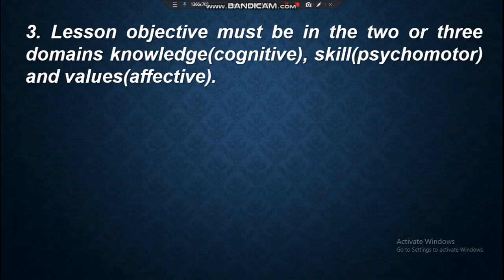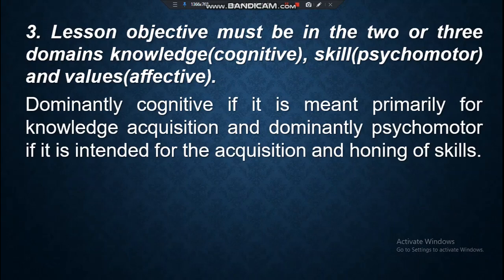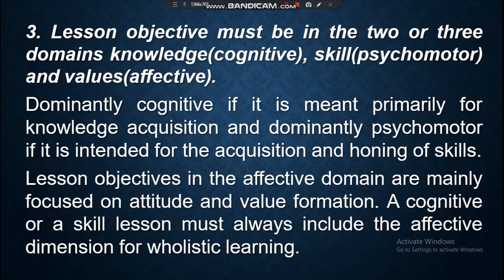Third, the lesson objective must be in two or three domains: knowledge (cognitive), skill (psychomotor), and values (affective). Dominantly cognitive if it is meant primarily for knowledge acquisition, and dominantly psychomotor if it is intended for the acquisition and honing of skills. Lesson objectives in the affective domain are mainly focused on attitude and value formation. A cognitive or a skill lesson must always include the affective dimension for holistic learning.